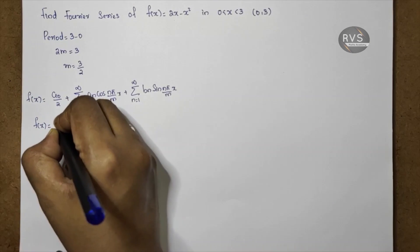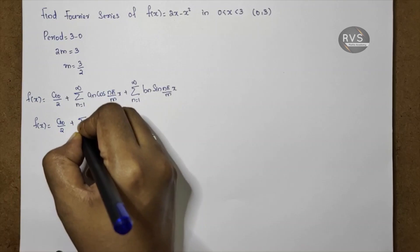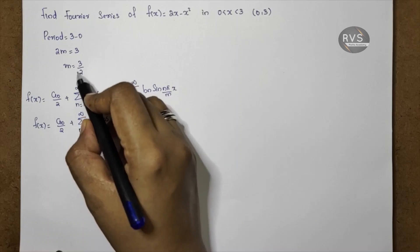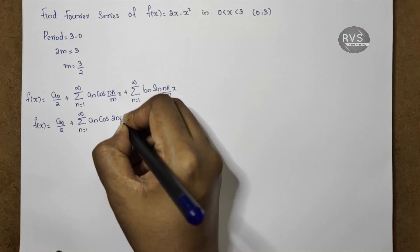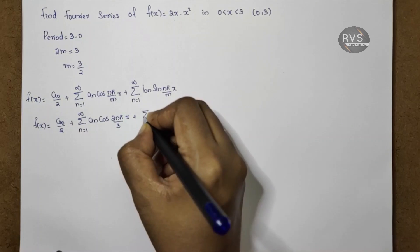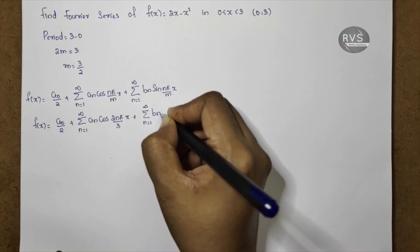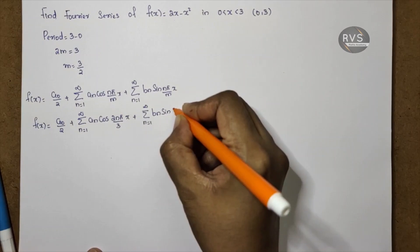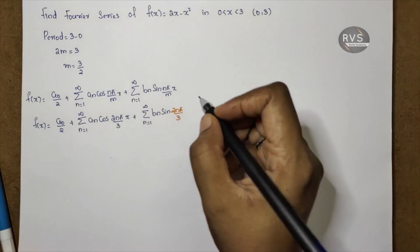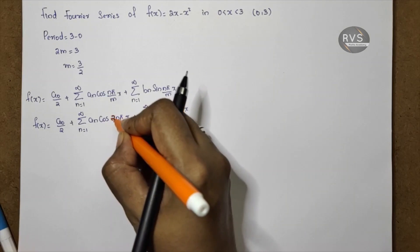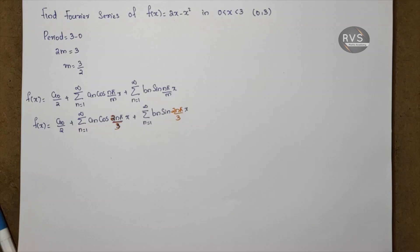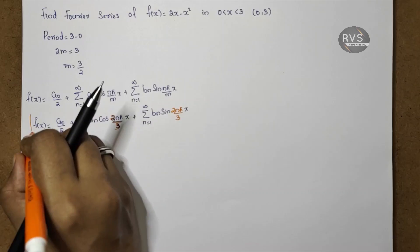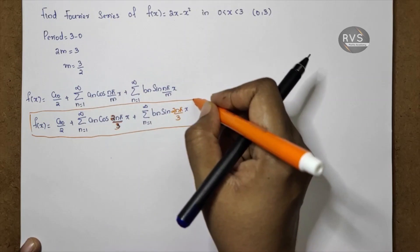F of x is equal to a0 by 2 plus summation n equal to 1 to infinity of an into cos 2n pi by 3x, plus summation n equal to 1 to infinity of bn into sin 2n pi by 3x. Substituting m equal to 3 by 2 gives 2n pi by 3 in both terms.